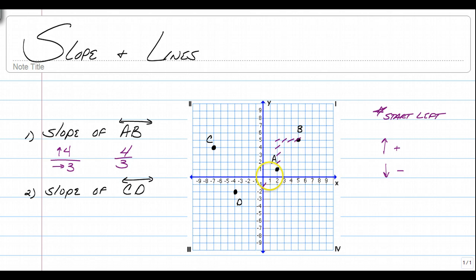We have 4 thirds, and it is a positive slope. If we were to look at this from left to right, it is increasing. That's how you calculate the slope. Why don't you try finding the slope of CD on your own, and when you're ready, click play and give it a try.